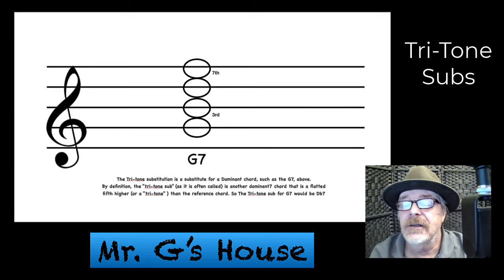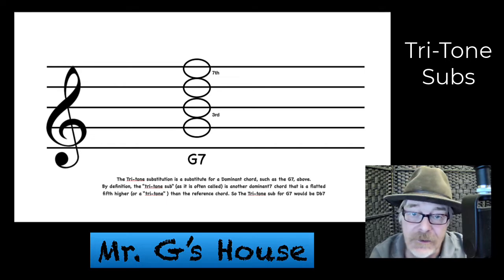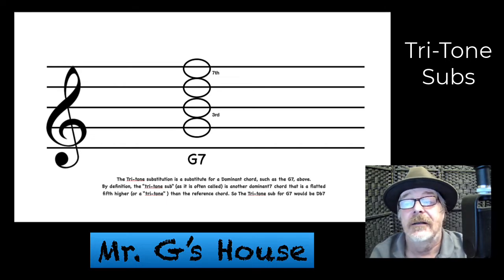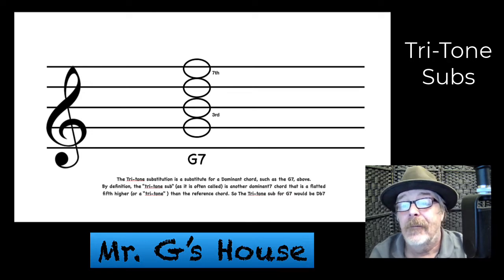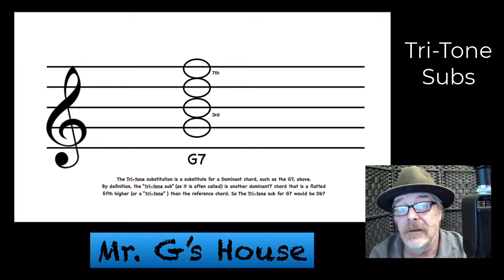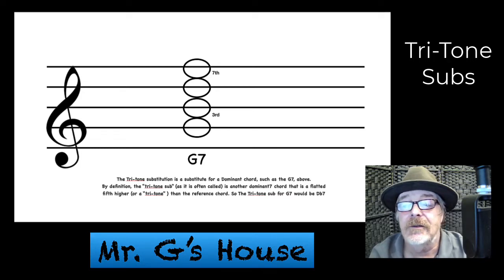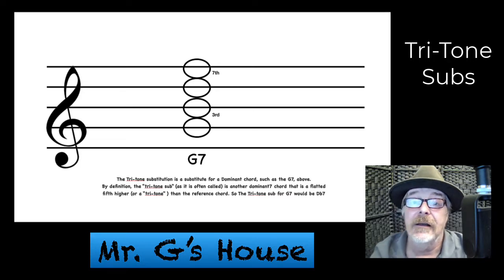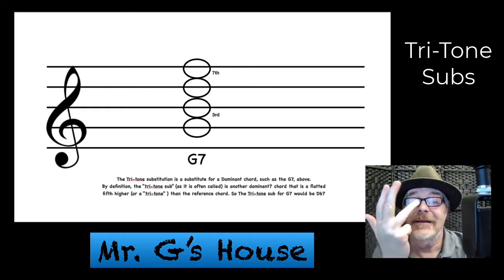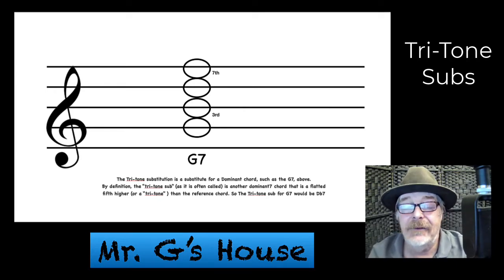Just know that the tritone substitution is a substitute chord that we use for a dominant 7 chord, like this G7 you see here. By definition, the tritone sub, as it's often called, is another dominant 7 chord that is a flatted 5th higher — or a tritone — than the reference chord. So the tritone sub for G7: G, A, B, C, flat that — D flat. So it'll be a D flat 7 chord.